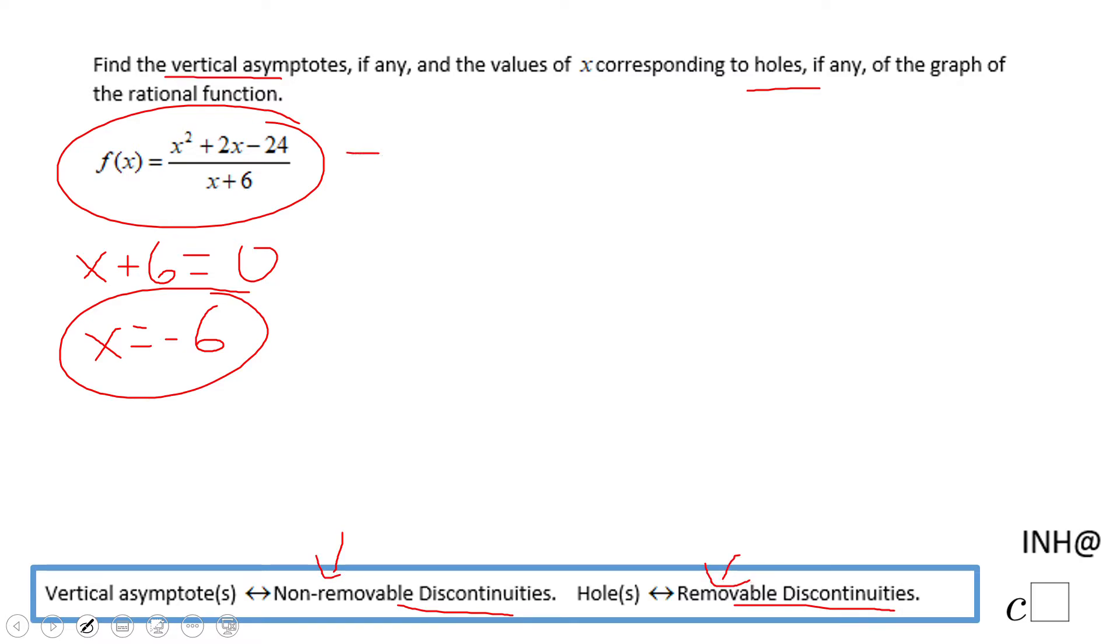For that reason, I'm going to go back to the function and look if we can simplify. If you notice, we have a quadratic as a numerator which can be factored out, and there will be x plus six times x minus four, two numbers whose product is negative 24, the sum is two, and x plus six is the denominator.